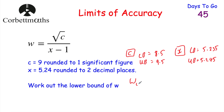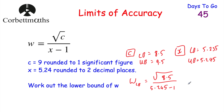To find the lower bound for w, we want the smallest possible numerator: that's the square root of 8.5 (using the lower bound of c). We divide that by the greatest possible denominator: 5.245 minus 1. This gives us the smallest possible numerator and the greatest possible denominator. Working this out gives 0.6868023433... — and that is the lower bound for w. Well done if you got that.